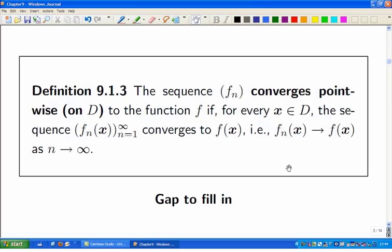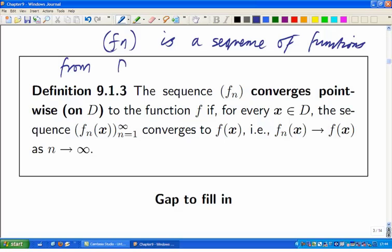So that brings us to the notion of pointwise convergence. Of the two notions of convergence for sequences of functions, this is slightly easier than uniform convergence. You just look separately at each point x in the domain, and remember that fn is a sequence of functions defined on D, taking values in R.